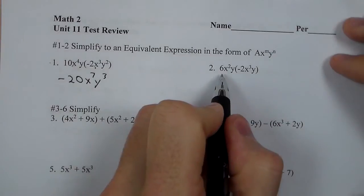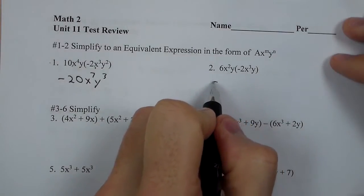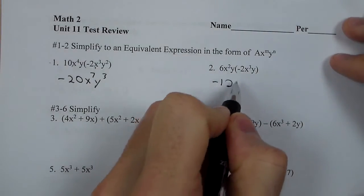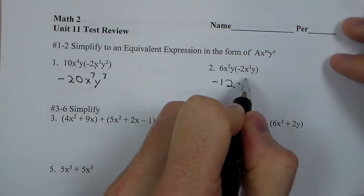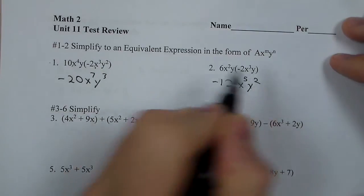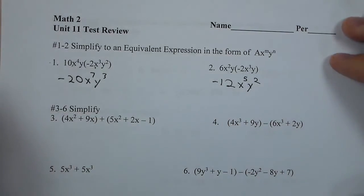In number 2, we get a negative 12 from 6 times negative 2, and x to the 5th and y squared because we combine the exponents.